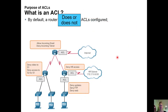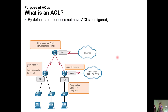Here's a question: by default, are routers configured with access control lists or not? By default, a router does not have access control lists configured, and neither does a switch. Everything comes out of the box without access control lists. If you want to implement additional security and filtering, you would add an access control list after you set up your network and your initial configurations.